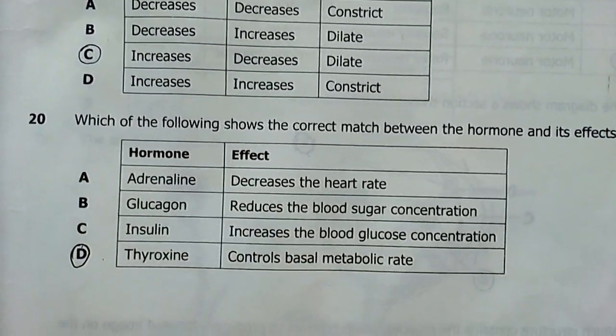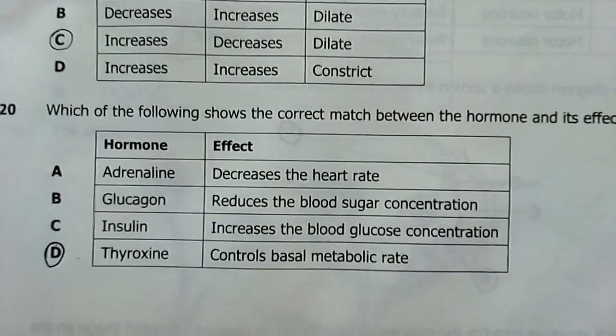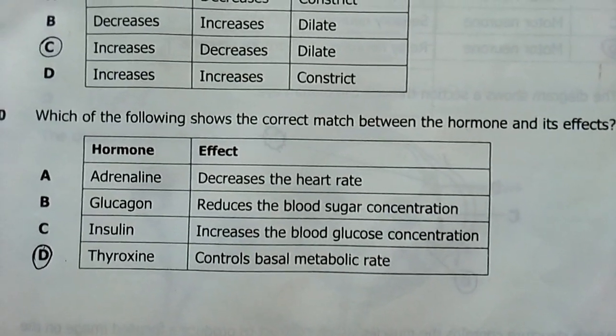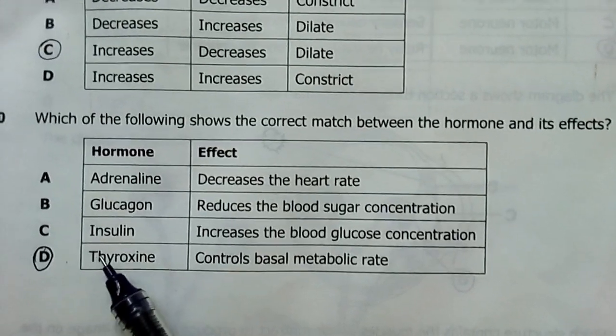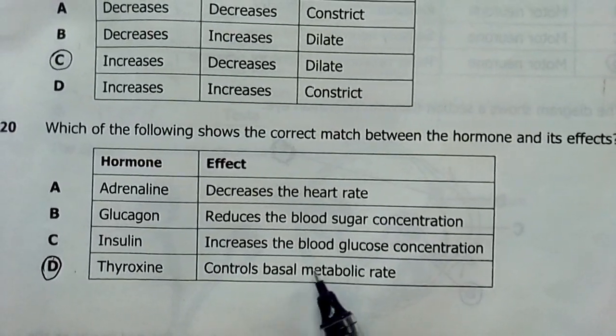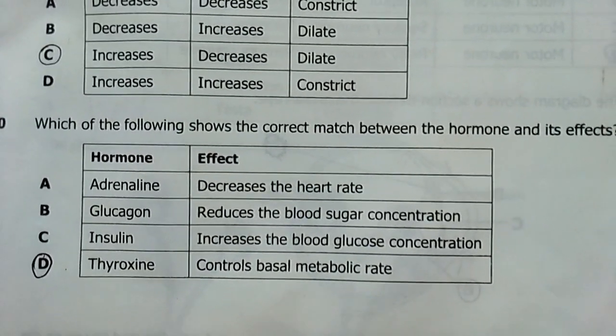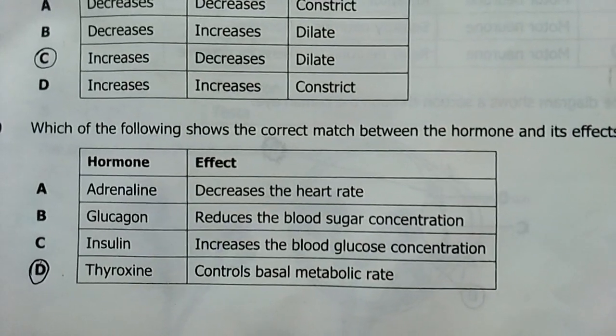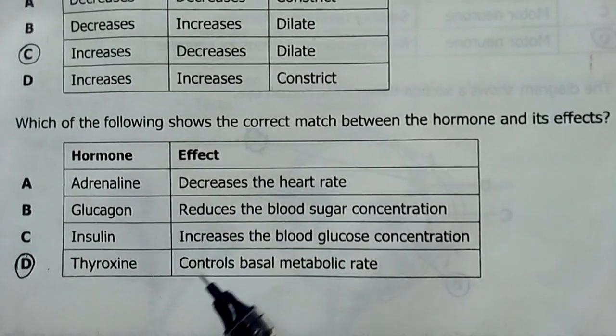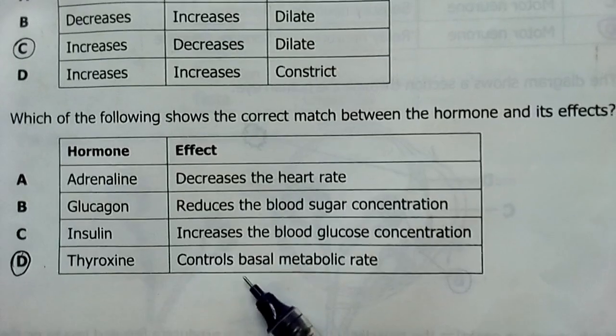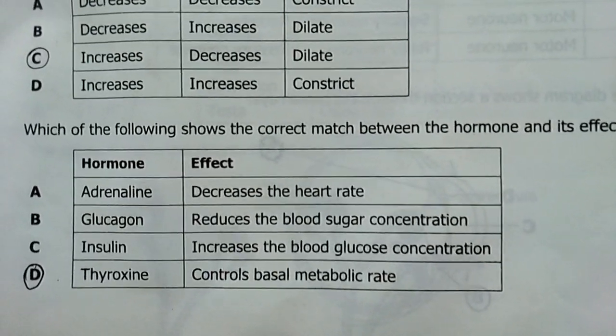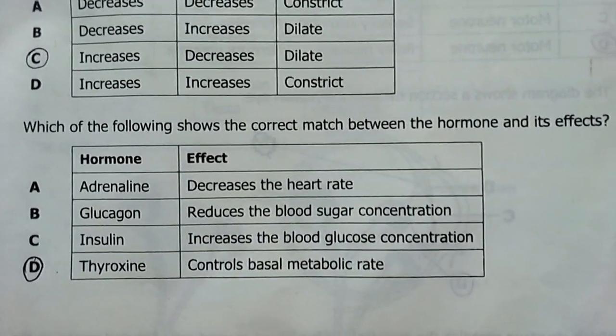Number 20, which of the following shows the correct match between a hormone and its effect? My answer here is D. Thyroxin, controls basal metabolic rate. And in children, it's a growth hormone, especially in children, but this is its actual effect. Adrenaline, no, that's not the answer. So my answer there is D.